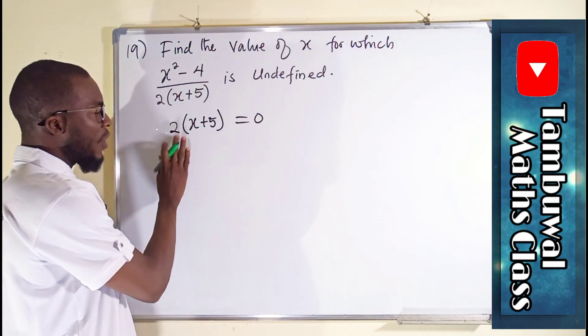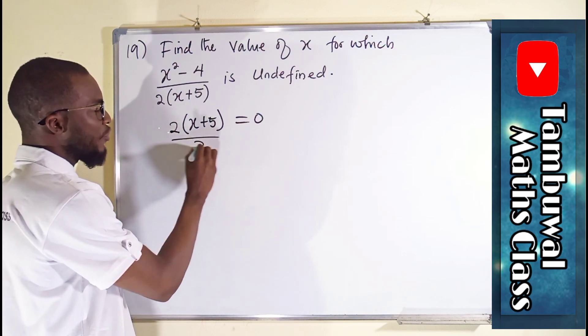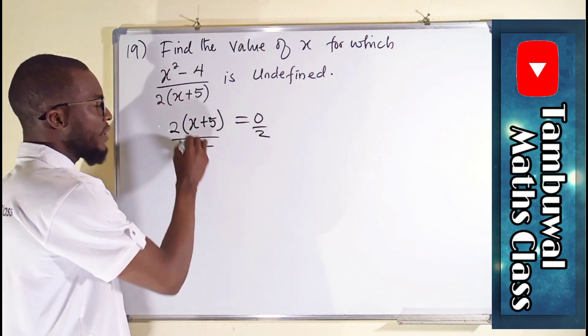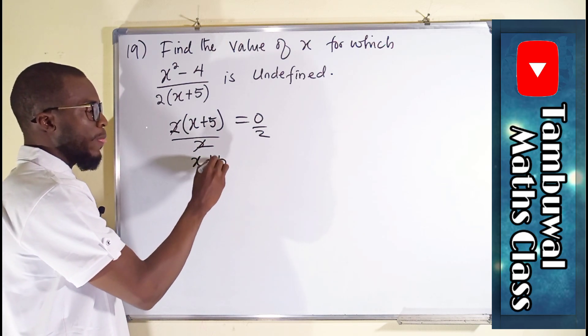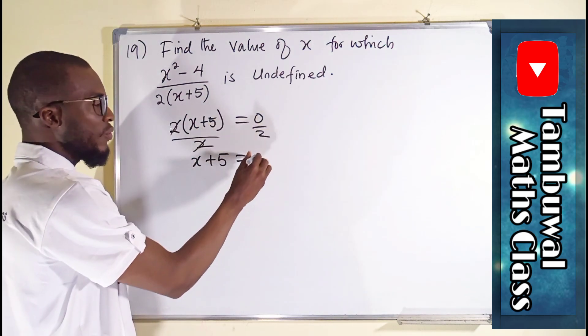So from here, without even expanding this bracket, we can divide both sides by 2 in order to eliminate these 2. Leaving only x plus 5 equal to 0, divided by 2 is still 0.